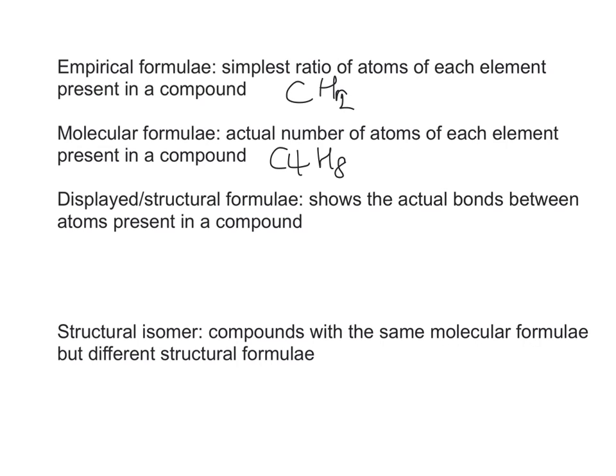Now we can move on and look at the displayed structural formula. And in this instance, what you're doing is you're looking at the actual bonds between the atoms present in a compound. So you're actually going to draw a diagram this time. So if the question says, draw the displayed formula of methane, for example, this is what you need to draw. CH4, but with all the bonds showing. It's useful to remember that carbon always forms four bonds and hydrogen always forms one. And there's your displayed formula. And then finally, the structural isomer. All this means is compounds with the same molecular formula but different structural formula.